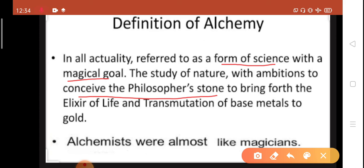It means they studied about nature with one ambition in their mind to take the philosopher's stone and to fulfill their wish magically of transformation, creation or combination of these metals to gold. And alchemists were almost like magicians.